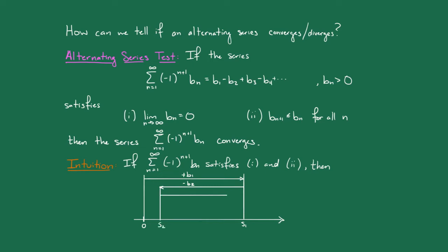Then we add b3 to get the third partial sum. Again, since the bn's are decreasing, b3 is less than b2, and so we can't have made it all the way back to s1.